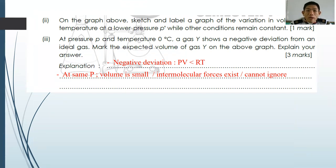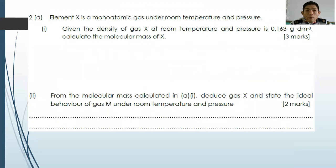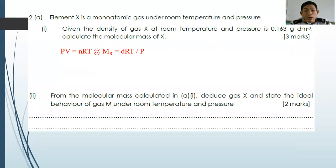Moving on to question number two: element X is a monoatomic gas under room temperature and pressure. Given the density of the gas at room temperature and pressure is 0.163 g dm⁻³, calculate the molecular mass of X. You use the derived ideal gas equation: MR = DRT/P. The gas constant is 8.31 J mol⁻¹ K⁻¹, so pressure must be in Pascals and volume must be in m³.